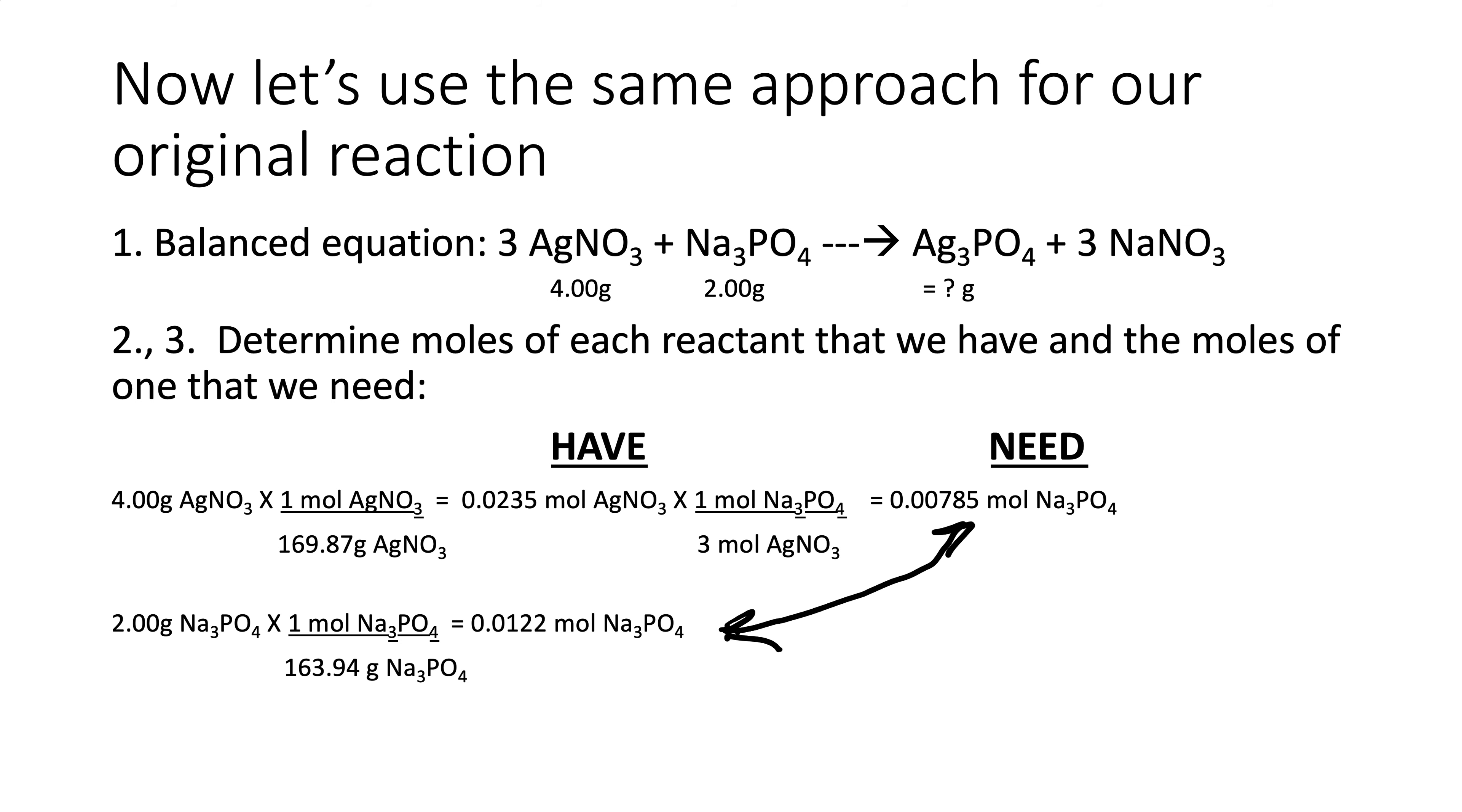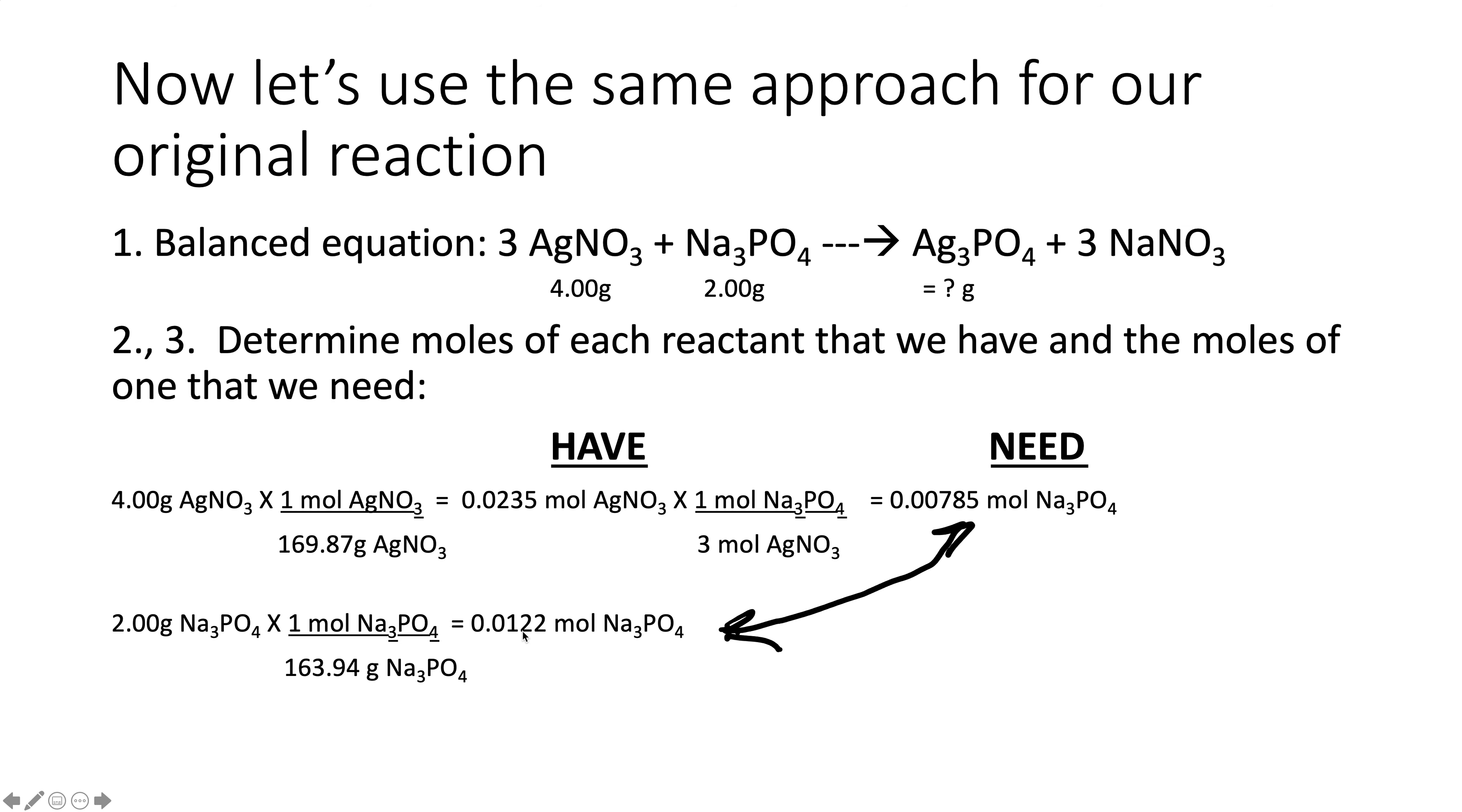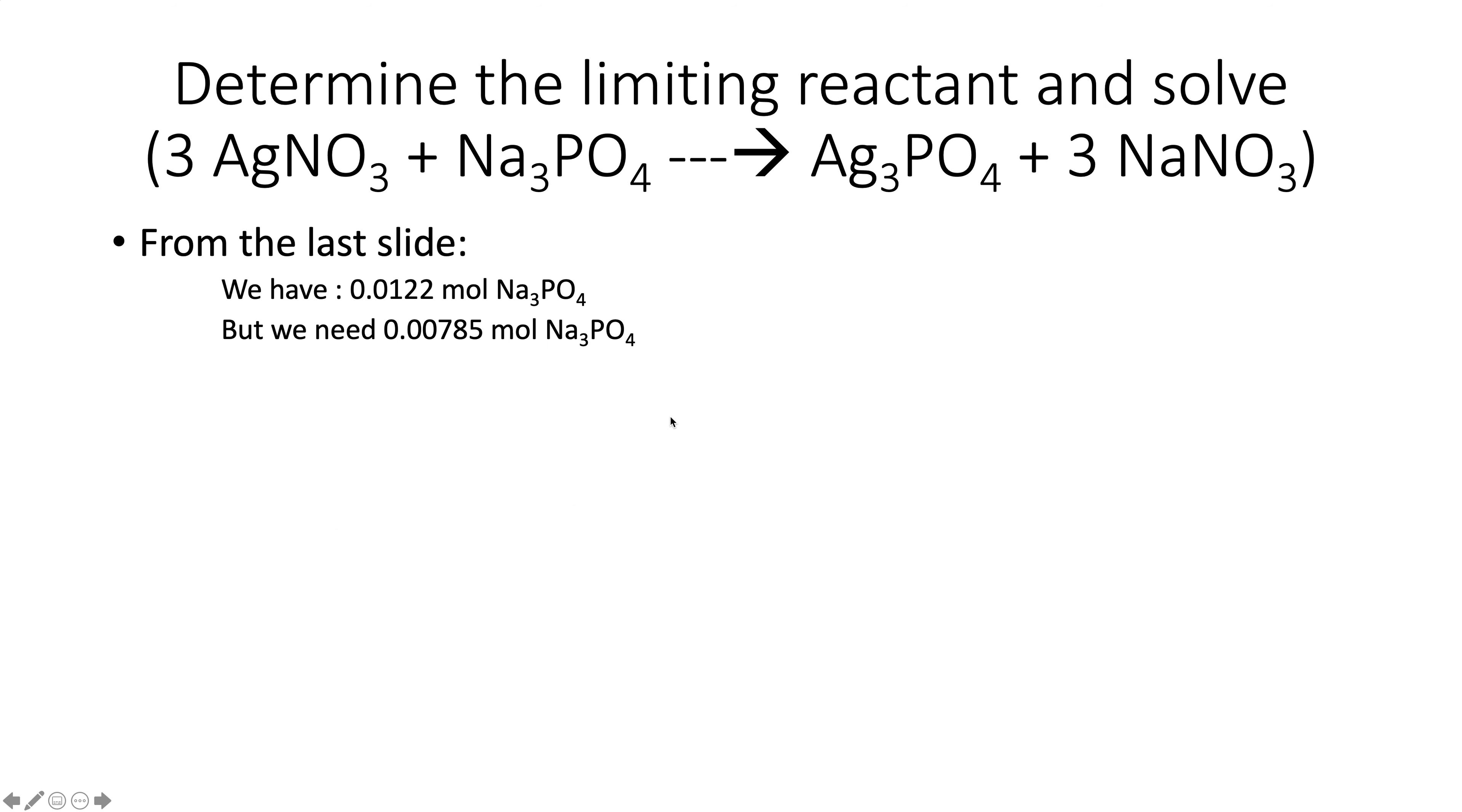Back from pause. And you can see, if you have, if you back up, right, we have 0.0122. We only need 0.00785. So we need less than we have. We have more than we need. Therefore, sodium phosphate is not limiting. That means the silver nitrate is limiting.